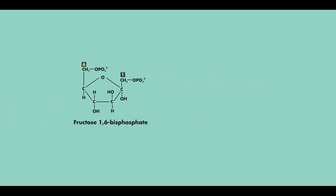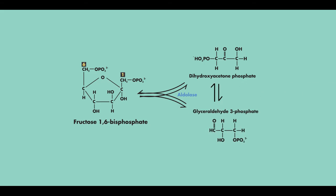Next, fructose 1,6-bisphosphate gets split into two molecules catalyzed by the enzyme aldolase. It either becomes dihydroxyacetone phosphate or glyceraldehyde 3-phosphate.